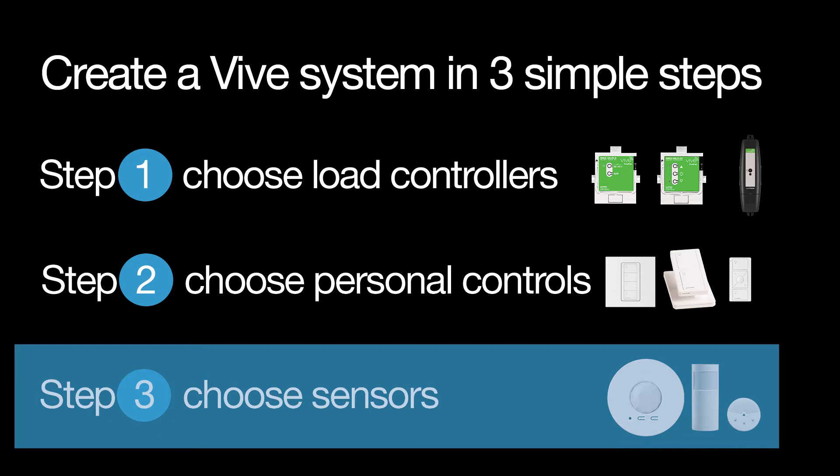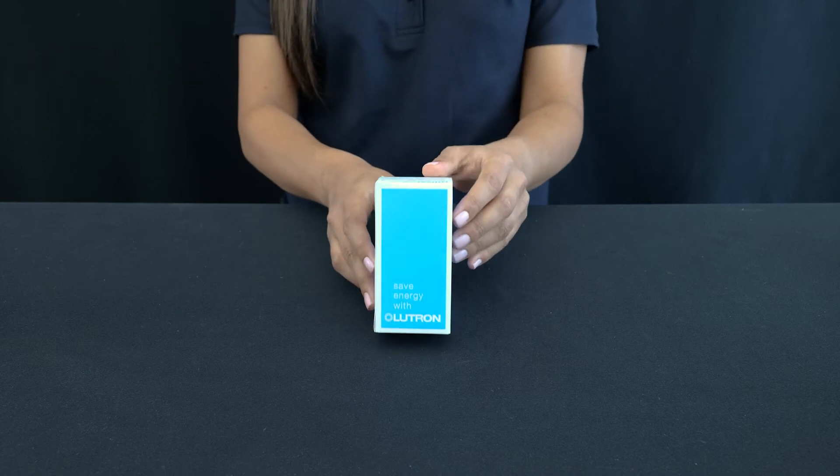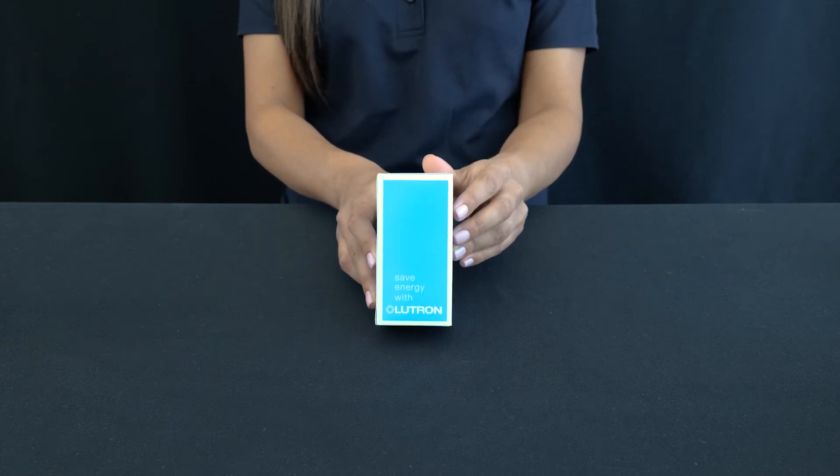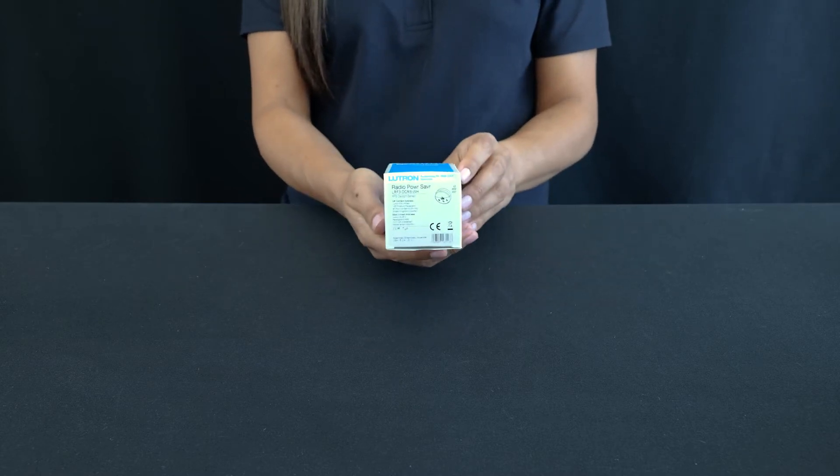Now, let's do some unboxing. The Lutron wireless daylight sensor is a battery-powered sensor that automatically controls lights via RF communication to compatible dimming or switching devices.